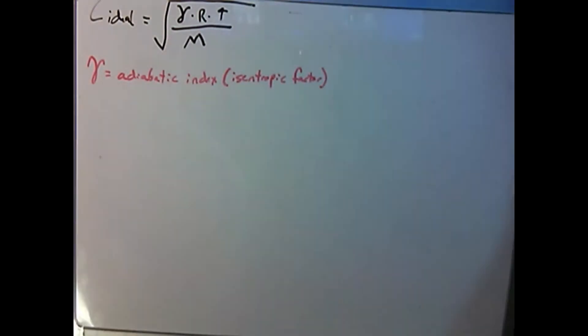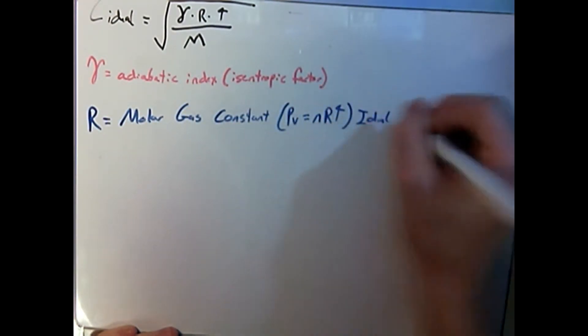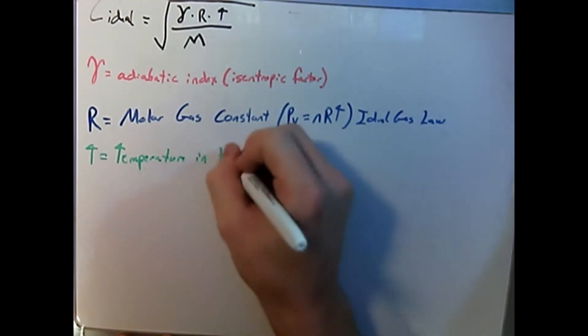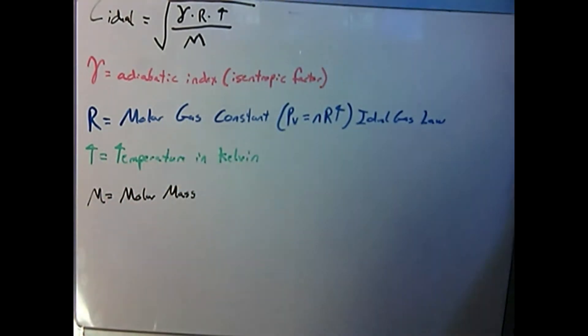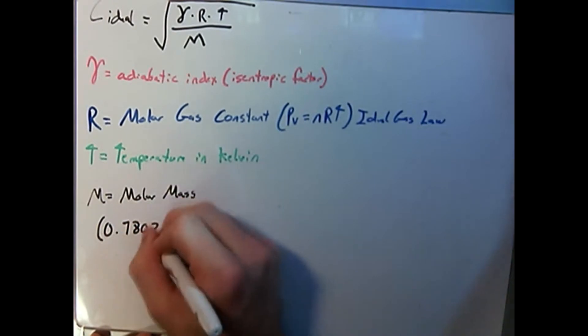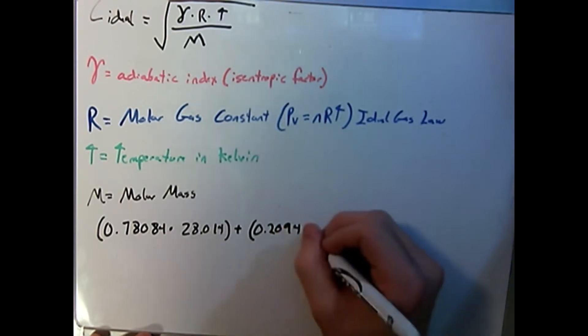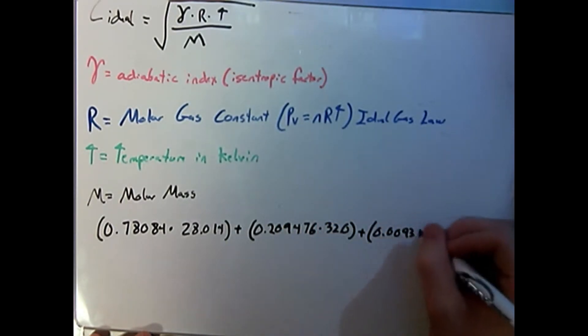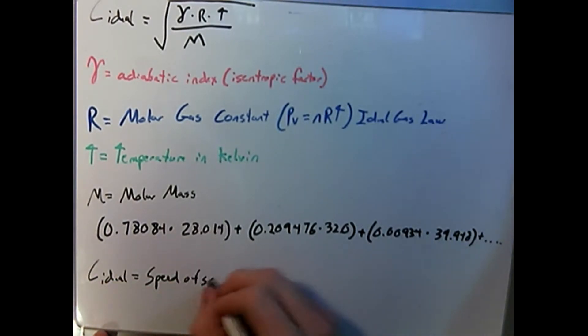So let's look at our other terms. We also have R, which is the molar gas constant, which comes from the ideal gas law of PV equals nRT. T is the temperature given in Kelvin. M is the molar mass. To figure this out for air, we take the relative abundance, or the percent composition, and multiply by the molar mass of each species found in air. When we add all these values together, we'll come up for the total for the molar mass of air. And finally, C ideal is the speed of sound through that media.